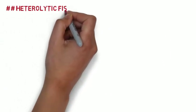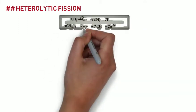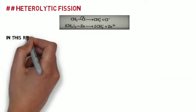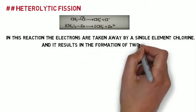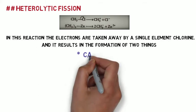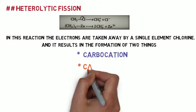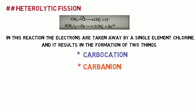The next one is heterolytic fission. It is otherwise known as unsymmetrical fission. In this reaction the electrons are taken away by a single element chlorine and it results in the formation of two things: carbocation Zn2+ and carbanion Cl-.